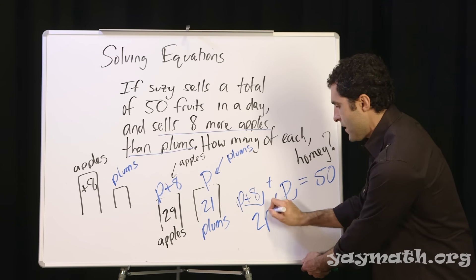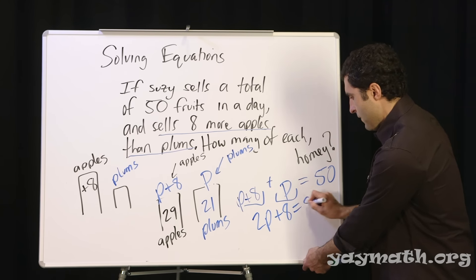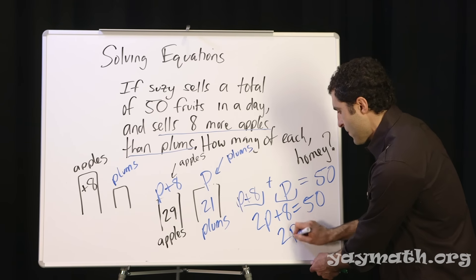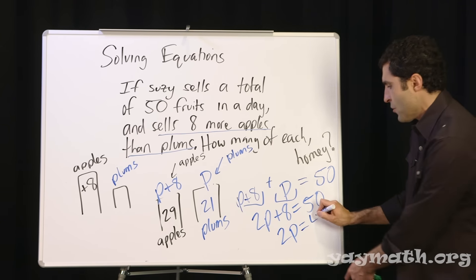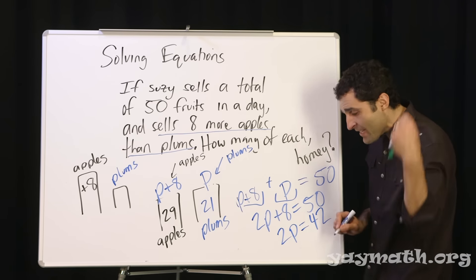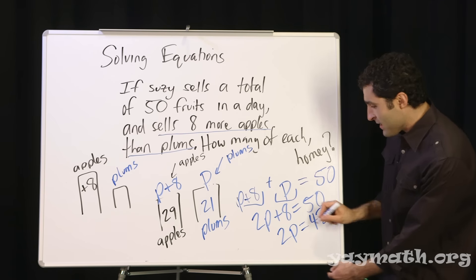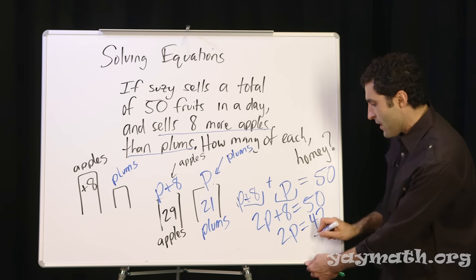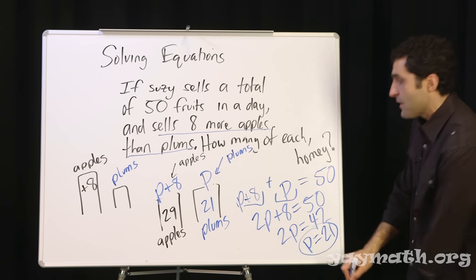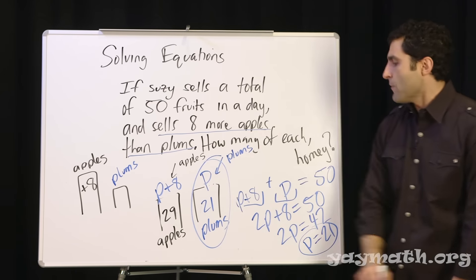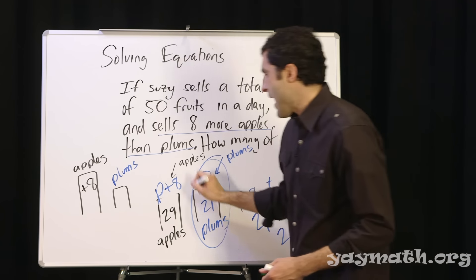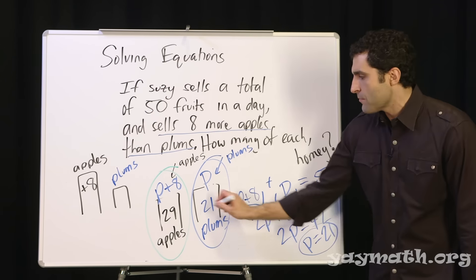P plus P is 2P plus eight equals 50. Subtract eight on both sides. We're hardcore algebra now. 2P equals 42. This is definitely a teacher moment. Using real estate. Every last piece. Divide both by two. A fruit is P equals 21. And isn't that exactly what we came up with before? 21 plums. Add eight to that. And we have green apples at 29 plus eight.